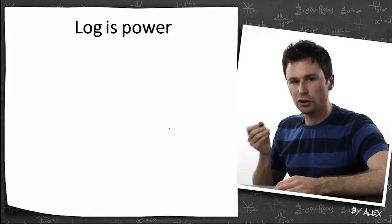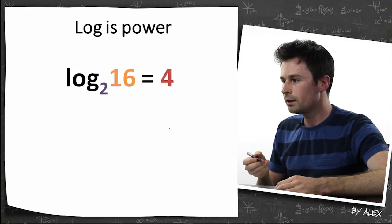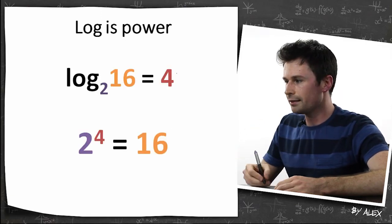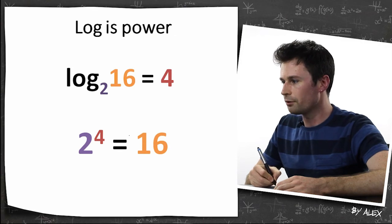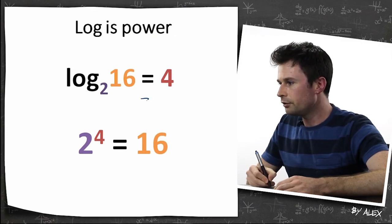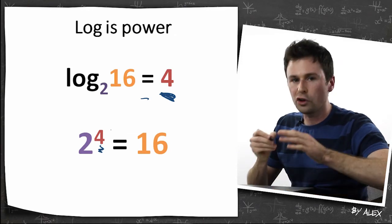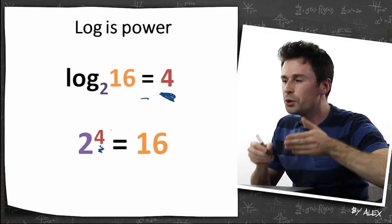So the idea here is log is power. So if you've got something like this, you can actually rewrite it like this. So you've got 2 to the power of 4 equals 16. And if you look up here, this and this are the same. So log is the value of the power.